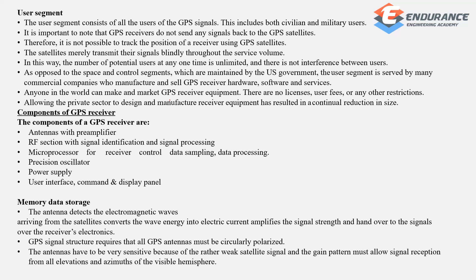The components of a GPS receiver include: antennas with amplifier, an RF section with signal identification and signal processing, a microprocessor for receiver control, data sampling, data processing, a precision oscillator, power supply, user interface, and a command and display panel.